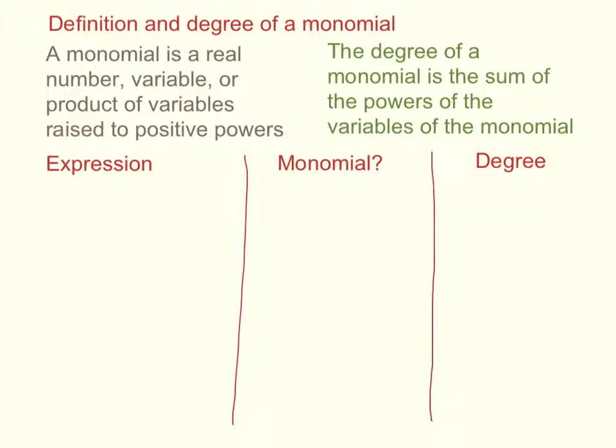In this video, I want to define monomial and talk about its degree. A monomial can be a real number, a single variable, or a product of variables. In other words, variables multiplied together, and the variables can be raised to positive powers, but not negative powers.